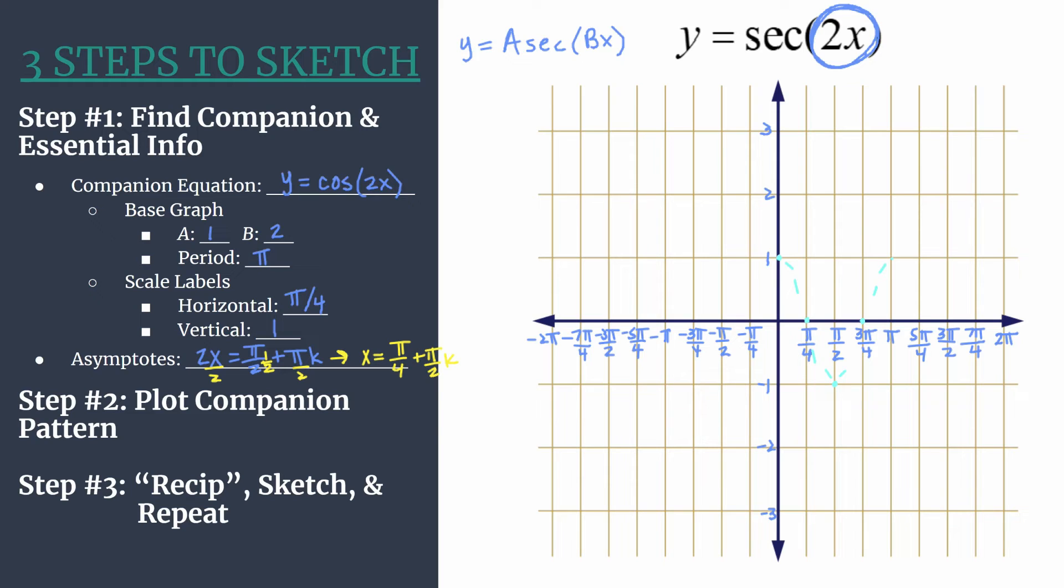Hopefully you've seen what a secant graph looks like. Maybe you've looked at the parent graph, y equals secant x. But basically, we're taking the y values of our companion cosine graph, and we're going to graph the reciprocal of them, or we're flipping them, if you want to say it that way.